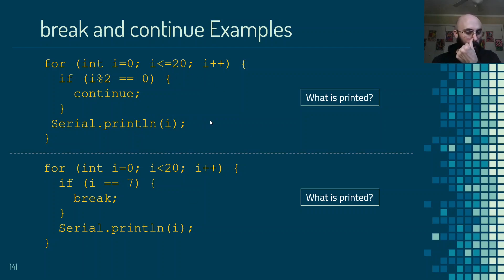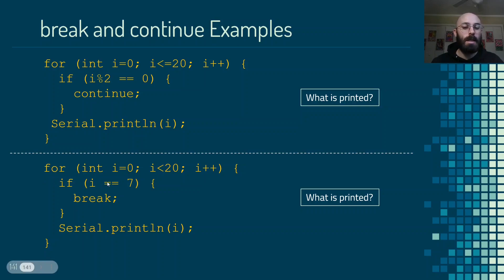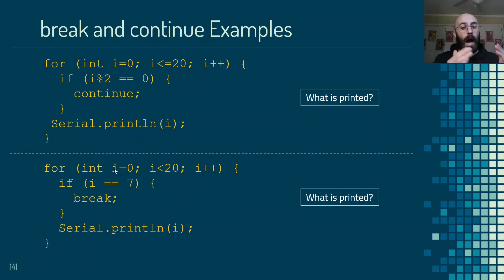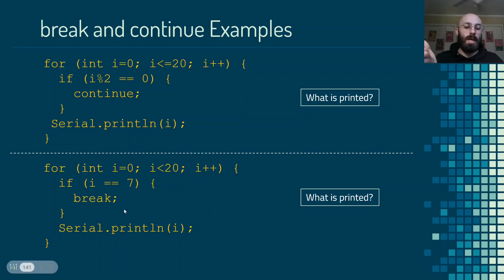In the break example, we start at 0 and go up to but not including 20, stepping by 1. Inside, if i equals 7 we hit the break statement, which exits the loop entirely — it doesn't go back up to check any other conditions, it stops the loop dead in its tracks. So i goes from 0 all the way up, printing values 0 through 6, but when it hits i equals 7, the loop stops. So the output would be 0, 1, 2, 3, 4, 5, 6.